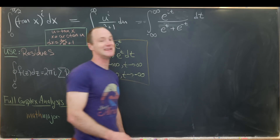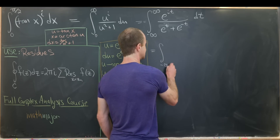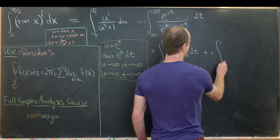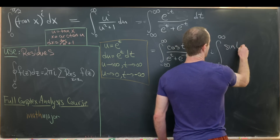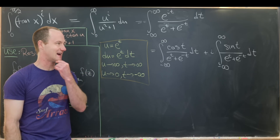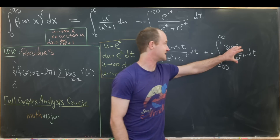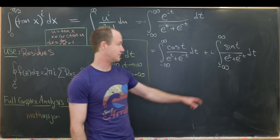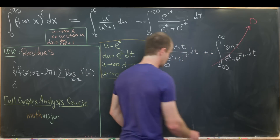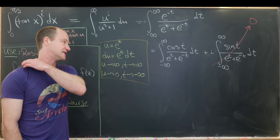Next, we use Euler's formula: e^(iθ) = cos θ + i sin θ. This lets us split the integral into the integral of cos(t)/(e^t + e^(−t)) dt plus i times the integral of sin(t)/(e^t + e^(−t)) dt. Since sin is an odd function and the denominator is even, the entire integrand in the second integral is odd. Integrated over a symmetric domain, that gives zero. So we're left with just the cosine integral.